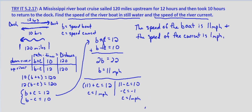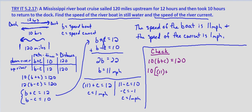Now let's go ahead and check this. I'm going to section this off so we can check. We'll use our original equations. 10 times b plus c equals 120. So we want to know does 10 times b which we determined to be 11 plus 1, does that equal 120? So 10 times 12, does that equal 120? 10 times 12 is 120, so that checks.